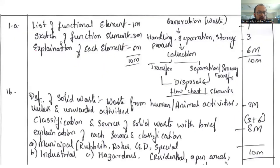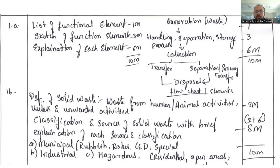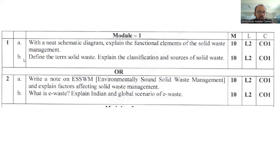For the answer key to Question 1a, listing the functional elements gets 3 marks and explanation of each element gets 6 marks. The functional elements are: waste generation, handling, product separation and storage, collection, transfer and separation, and finally disposal — totalling 10 marks.